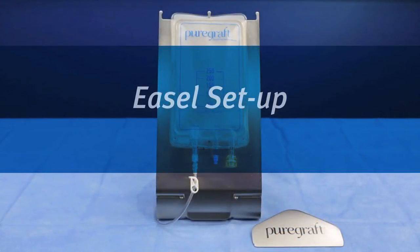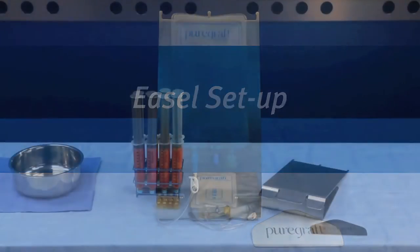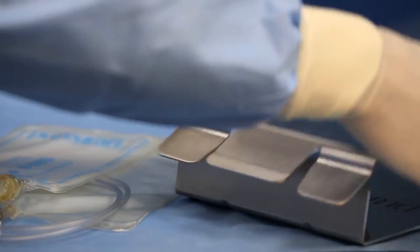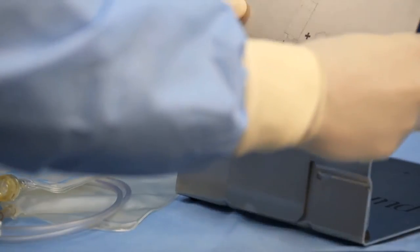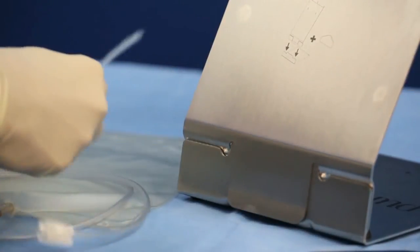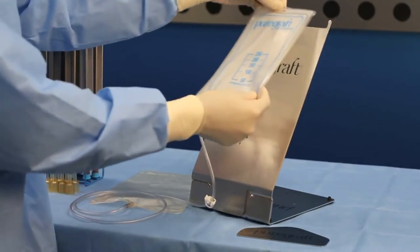Assemble the easel on the sterile field by aligning the grooves and connecting as shown graphically on the easel. Connect the PureGraft 250 to the easel by positioning the hole at the top of the bag into the notch on the easel.